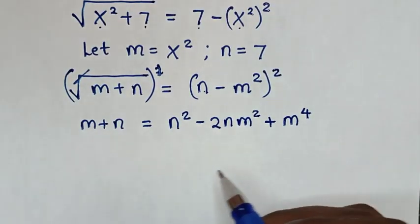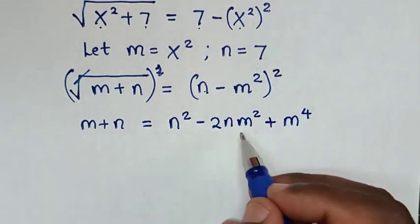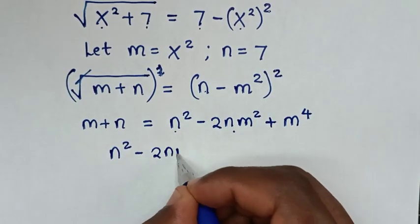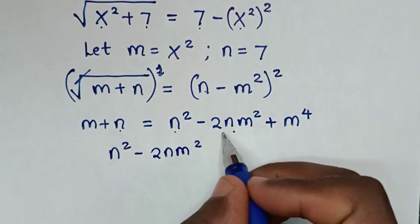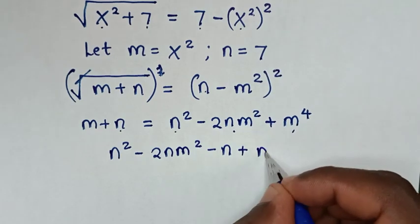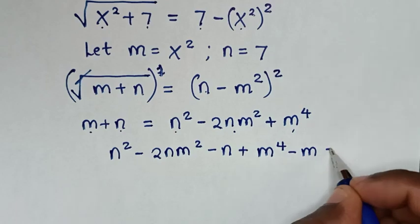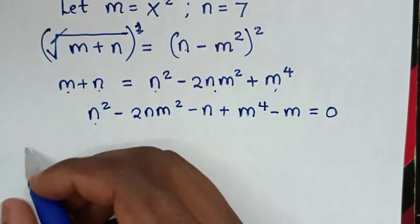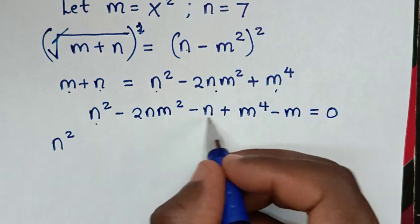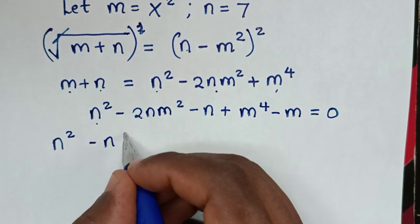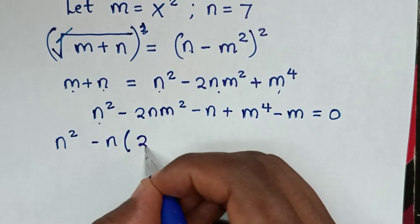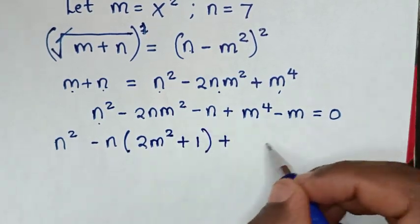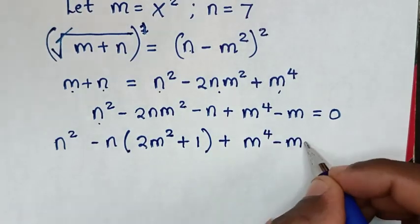From this equation we will make it a quadratic equation in the form of n. Starting with n squared minus 2nm squared, we take n to the other side: minus n, and take m to the other side: plus m to the power 4 minus m equals 0. Factoring out negative n from the middle terms gives n squared minus n times (2m squared plus 1) plus m to the power 4 minus m equals 0.